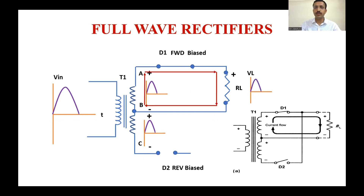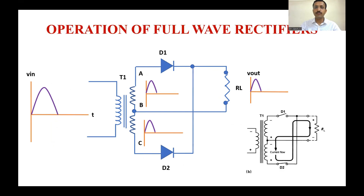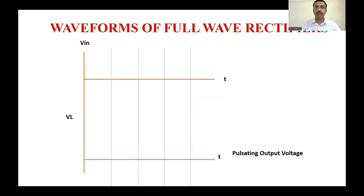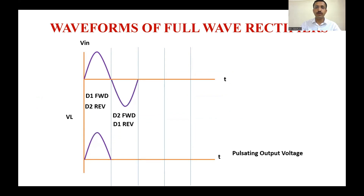In the negative half cycle, D1 goes into reverse bias and D2 goes into forward bias. As a result, the signal is obtained in the load resistance RL and current flows in this pattern. In the waveform, we can observe that in the positive half cycle D1 is forward biased and D2 is reverse biased, producing a pulsating output voltage.